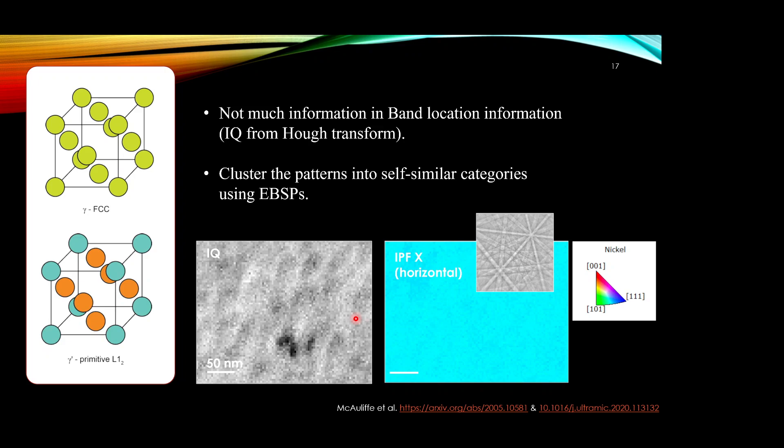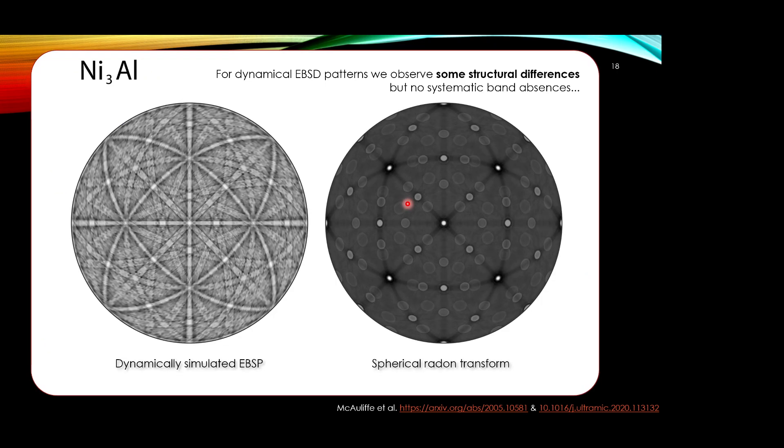If we look at dynamical calculations shown as stereographic projections of the dynamical pattern between nickel and nickel three aluminum, we see that there's very subtle variations in the spherical radon transform. We can see that those subtle variations are characteristic on particular crystal plane projections. Each of these circles corresponds to one of the bands in this diffraction pattern. There are no, unlike in a TEM for instance, there are no systematic band absences, the super lattice reflectors and those bits and pieces. Instead, the variations are much more subtle in the EBSD geometry and the Kikuchi bands.